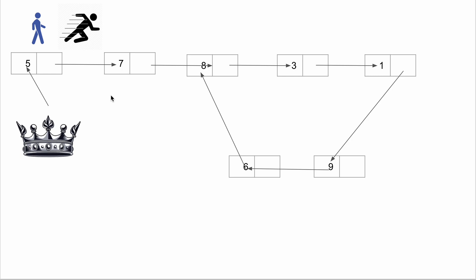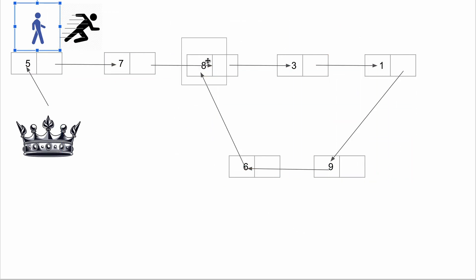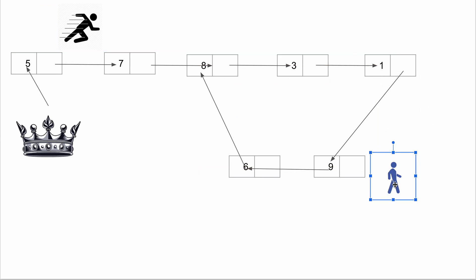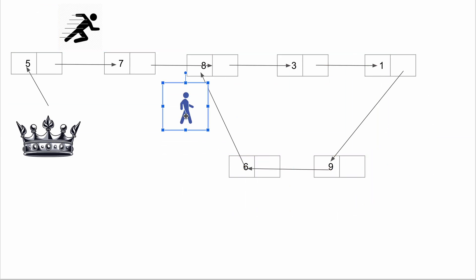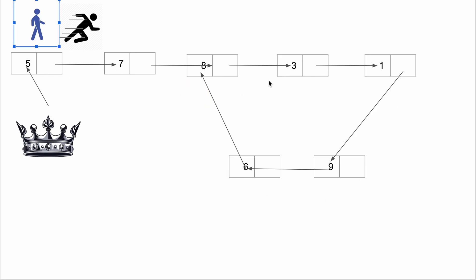What does a cycle mean? It means that one of the nodes is pointing to another node within the same linked list. For example, if you start traveling right you will never come out of this loop — none of the nodes is pointing to null, all nodes point to one of the other nodes. This actually forms a cycle, and we have to find the starting point of this cycle.